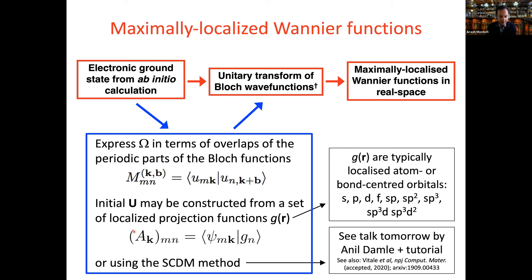Optionally, you can specify an initial guess for the unitary matrix U. Usually that's constructed using sets of predefined atom- or bond-centered atomic or hybrid orbitals — s orbitals, p orbitals, d orbitals, etc. You can generate a matrix of projections where you project the Bloch wave functions onto your guesses for the Wannier functions. Then, if you orthogonalize this matrix using a Löwdin transformation, that gives you an initial guess for your unitary transformation, which is then further optimized by the Wannier90 code.